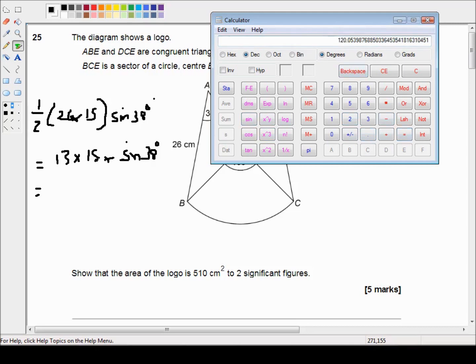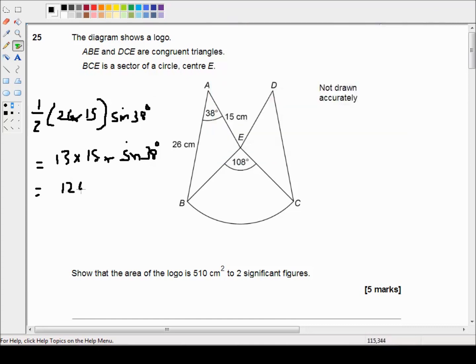So that's 120.05. I'm going to say 120.05 cm squared is the area of one of the triangles. I'm going to put 120.05 in the middle.